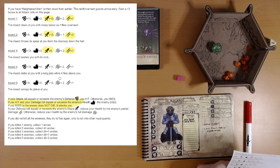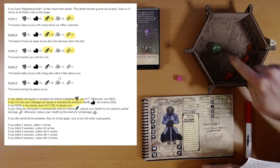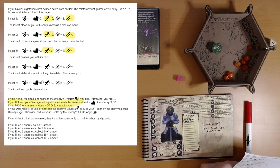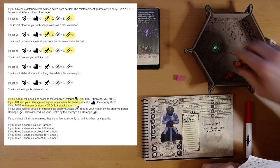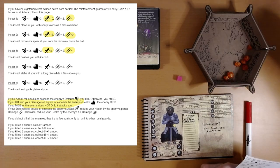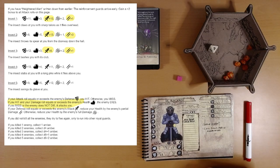Insect four. The insect stabs at you with a long pike while it flies above you. That was my attack roll. 15 plus three is 18. We easily hit it. We need to do four or more damage. Four. Excellent. We kill insect four. One insect down.